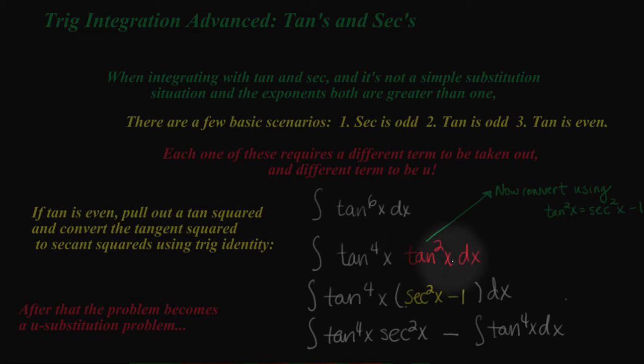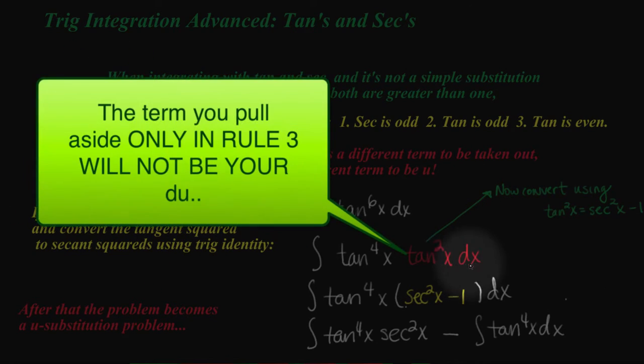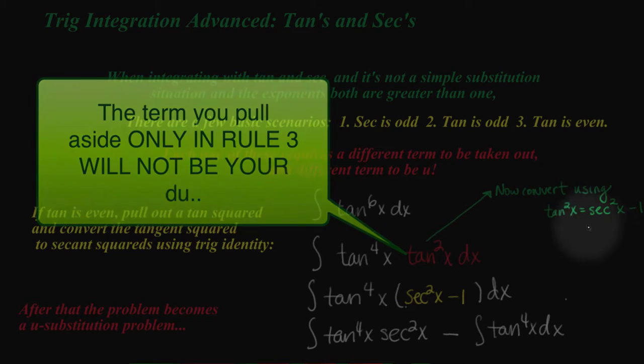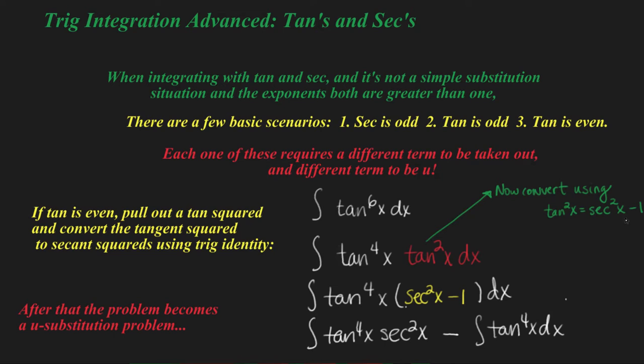So this is kind of different than the other ones because before this was my DU and we would convert this into secant squares. But now we're actually converting what we pull aside into secant squares using your trig identities. Make sure you know your trig identities.